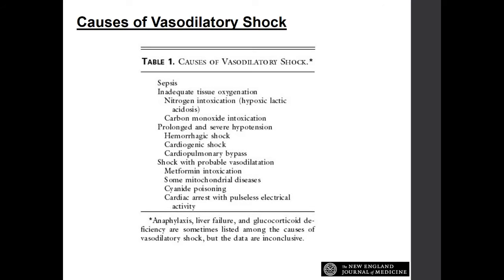The causes of vasodilatory shock include sepsis, inadequate tissue oxygenation, and cases of nitrogen intoxication. These are patients you might see on hospital service, in critical care, and in the ICU. Carbon monoxide intoxication is another example of inadequate oxygenation. We can have prolonged and severe hypotension due to hemorrhagic or cardiogenic shock or cardiopulmonary bypass. Shock with probable vasodilation includes metformin intoxication, mitochondrial diseases, cyanide poisoning, and cardiac arrest with pulseless electrical activity.